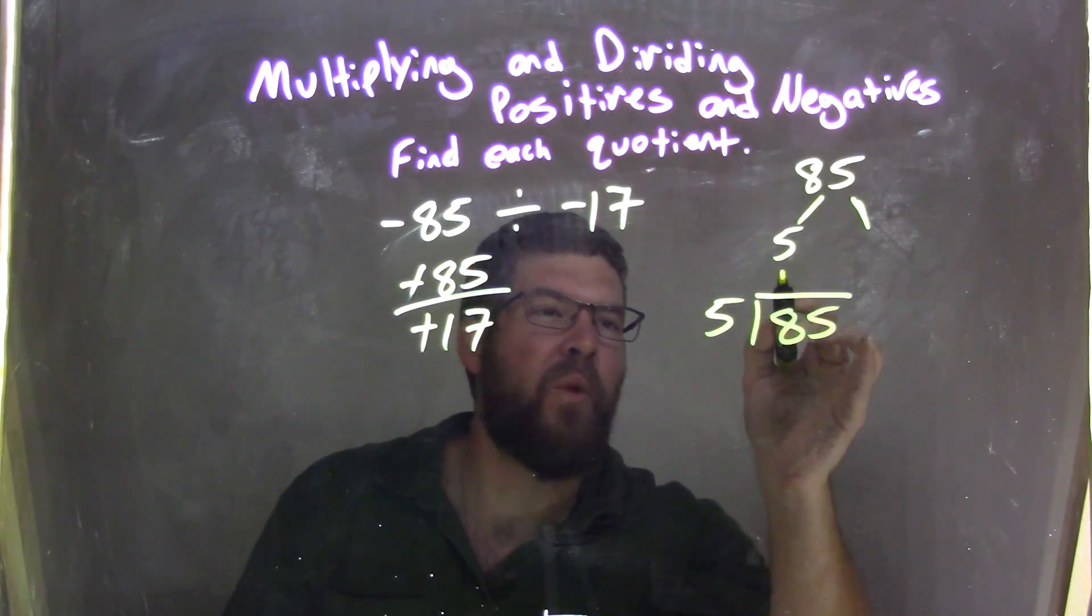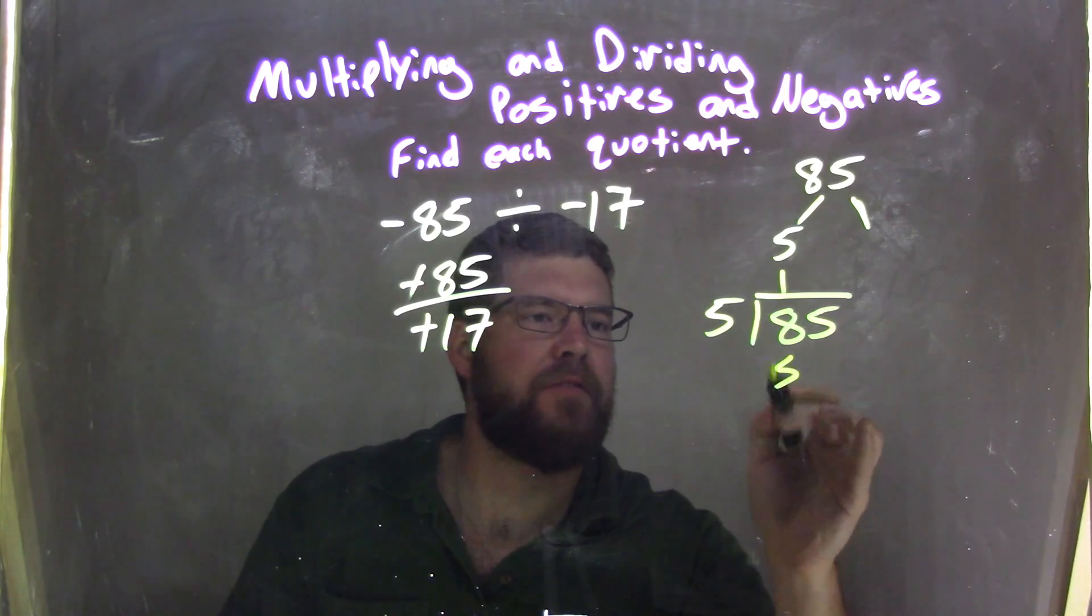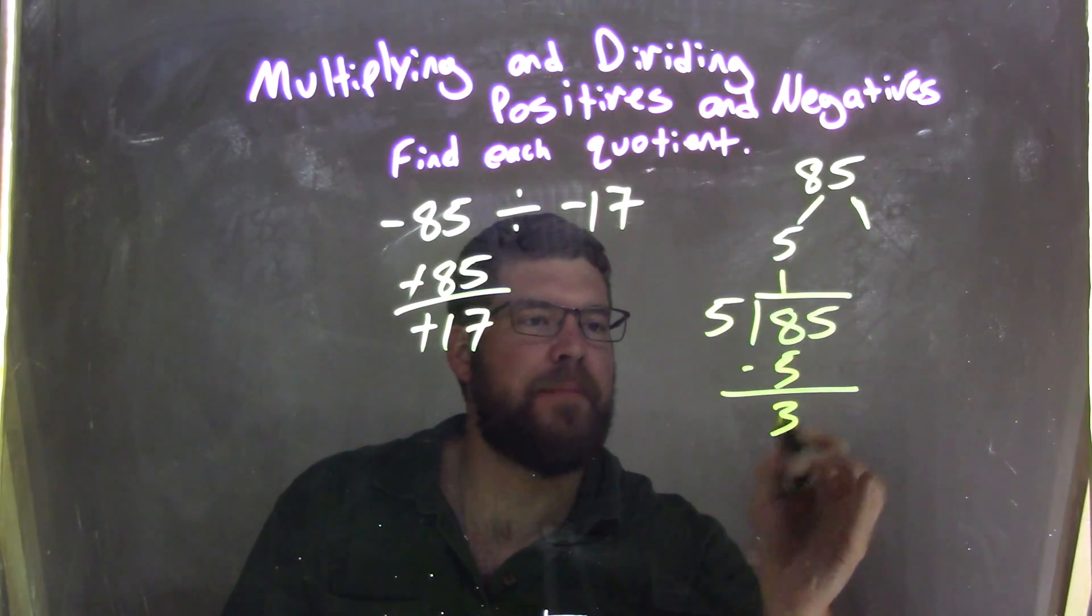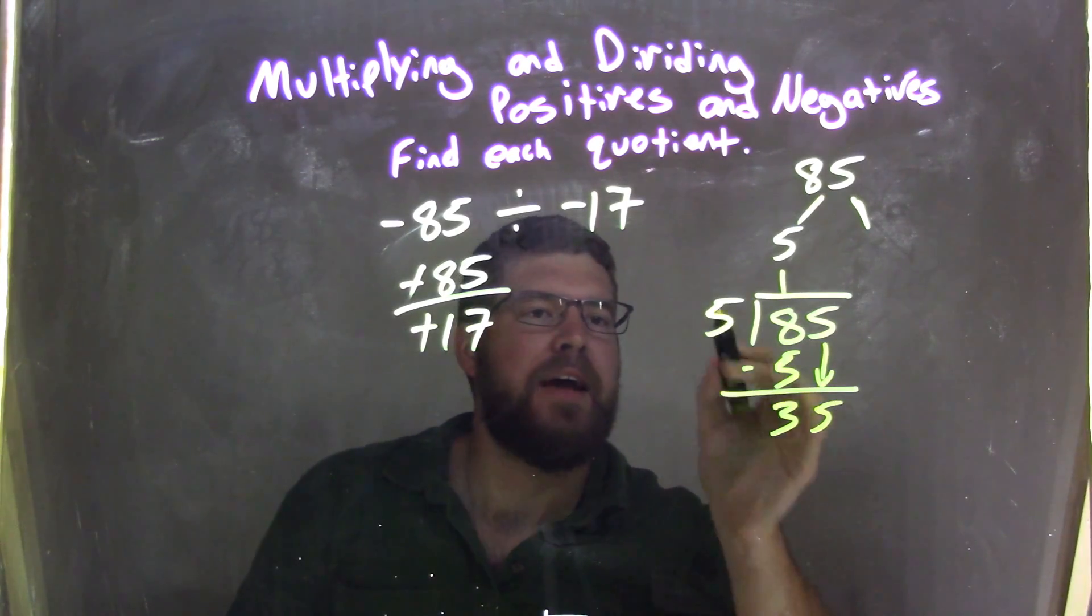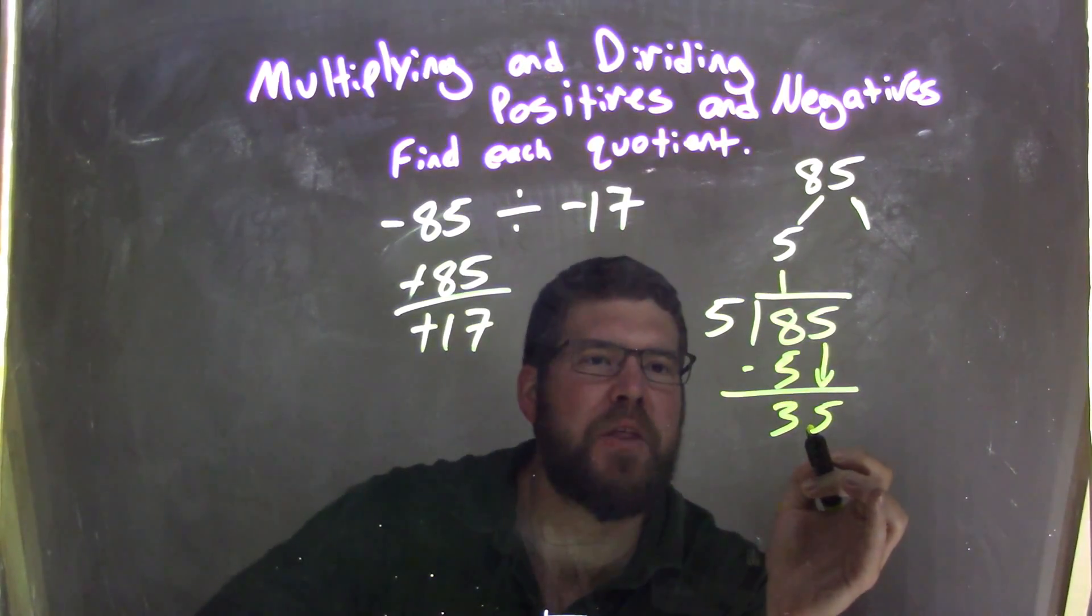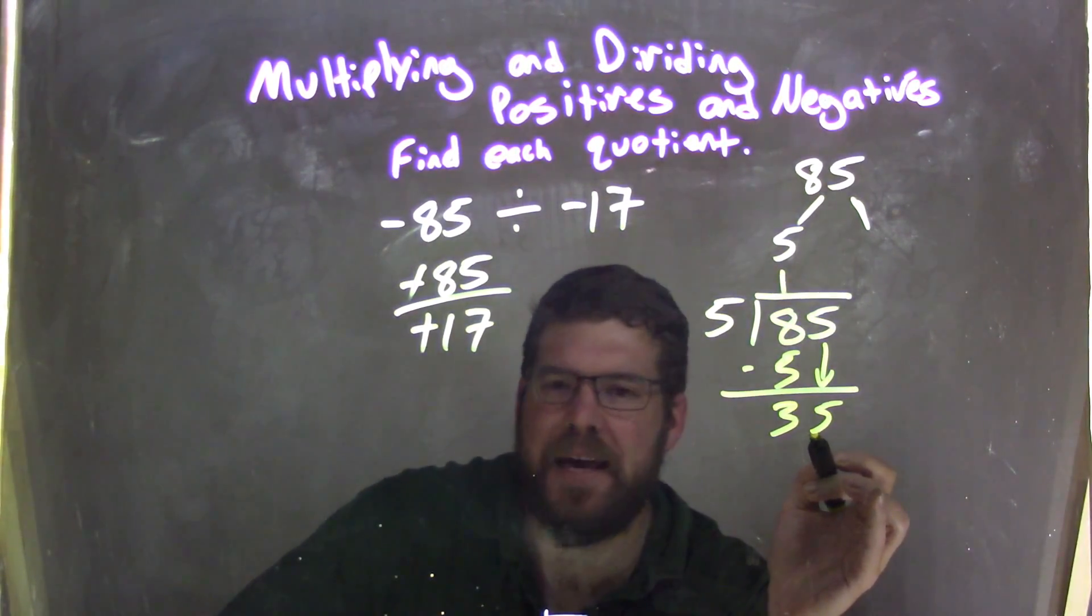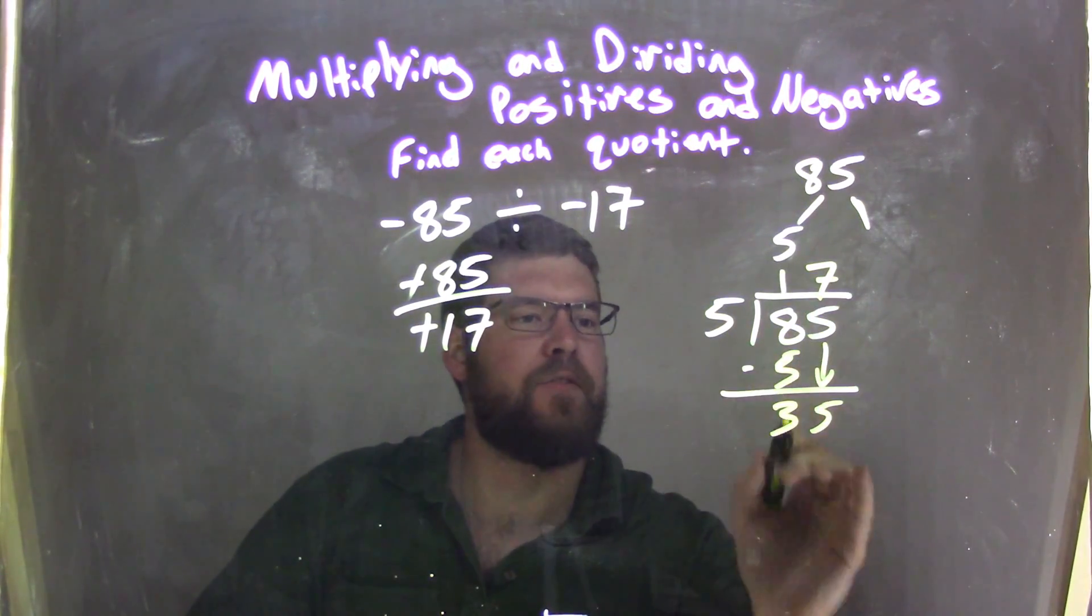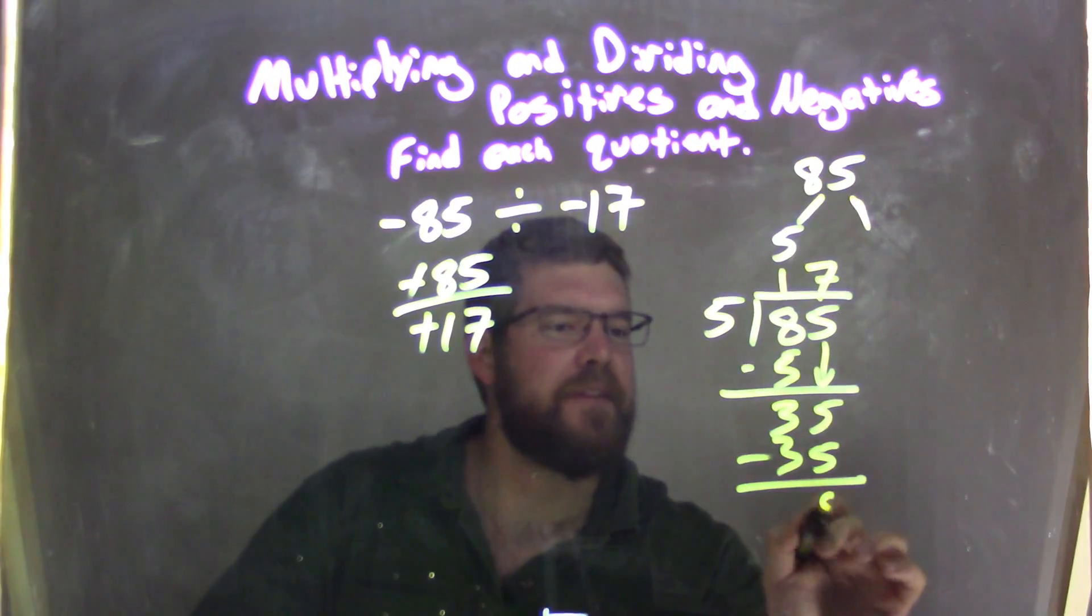Well, 5 goes into 8 one time. 1 times 5 is 5, I subtract it, and now I have a 3, right? 8 minus 5 is 3. I'm going to bring down this 5, and 5 goes into 35. Well, how many times does that happen? That's 7. 7 times 5 is 35, goes in evenly, and we're done.